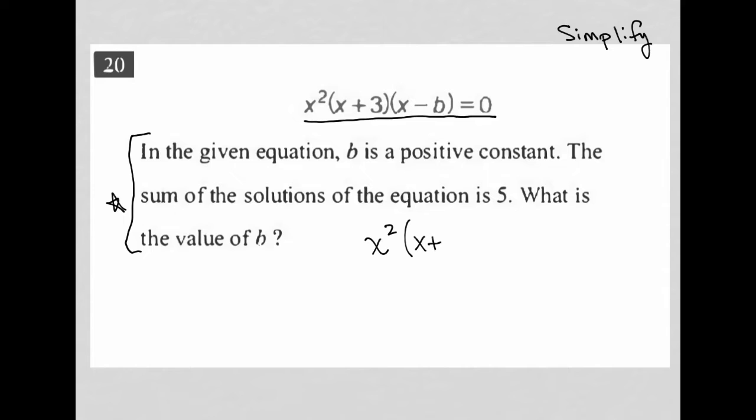X squared times X plus three times X minus B equals zero. The question says, in the given equation, B is a positive constant. The sum of the solutions to the equation is five. What is the value of B?